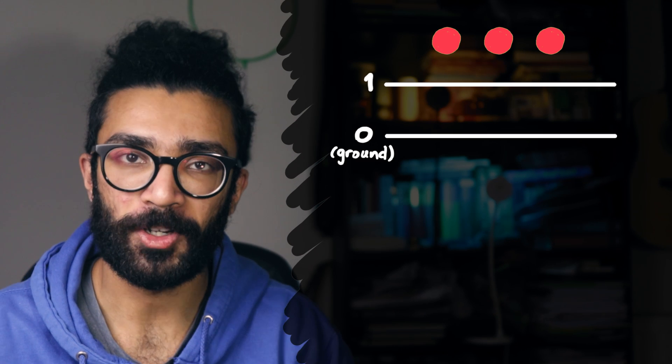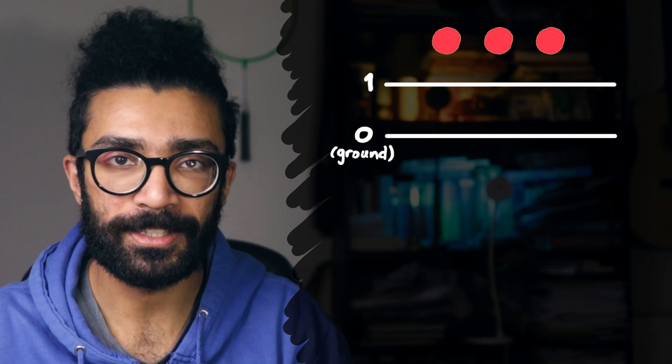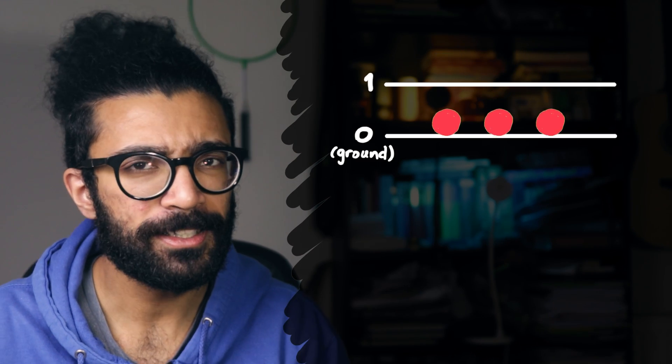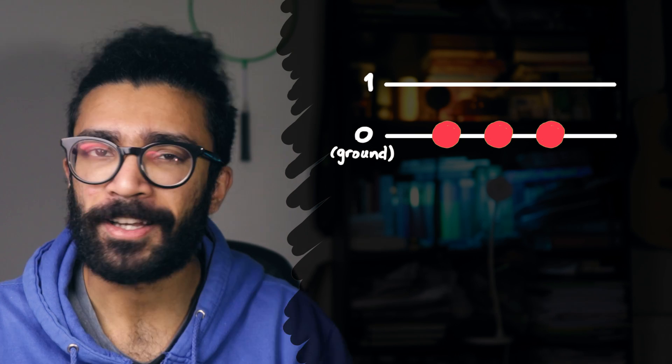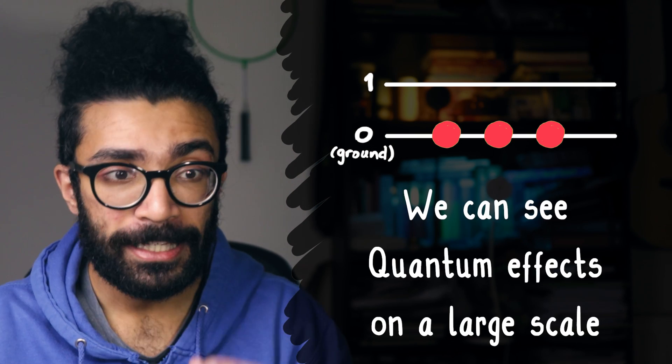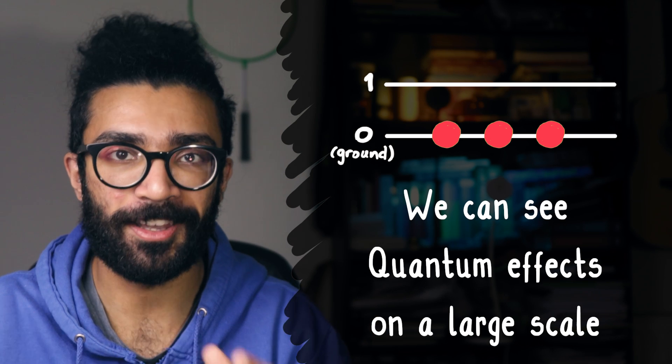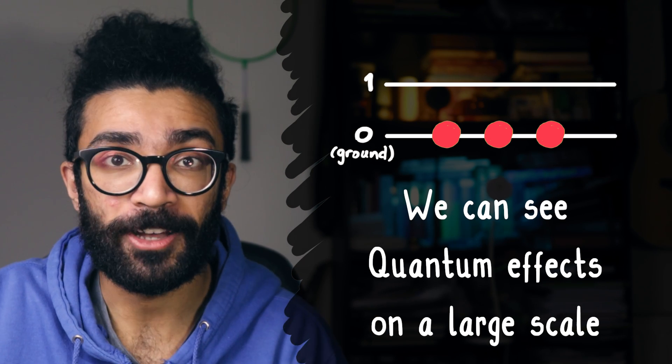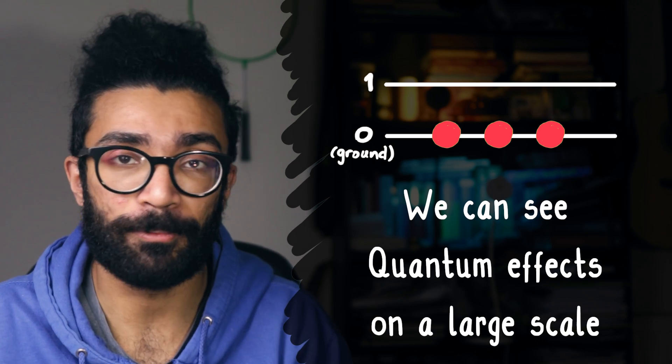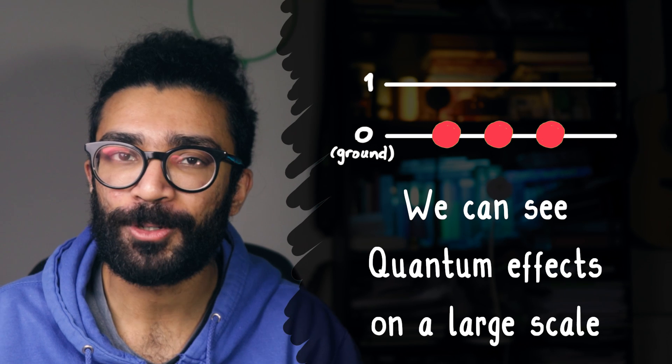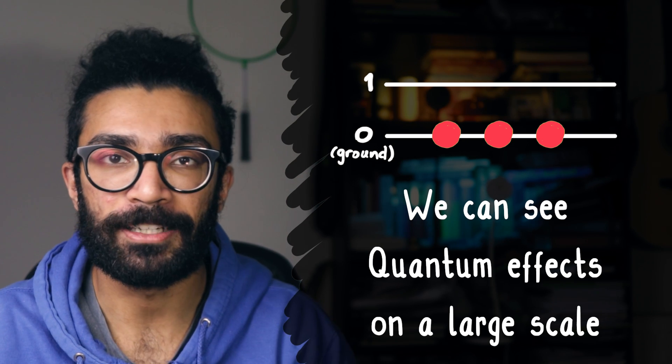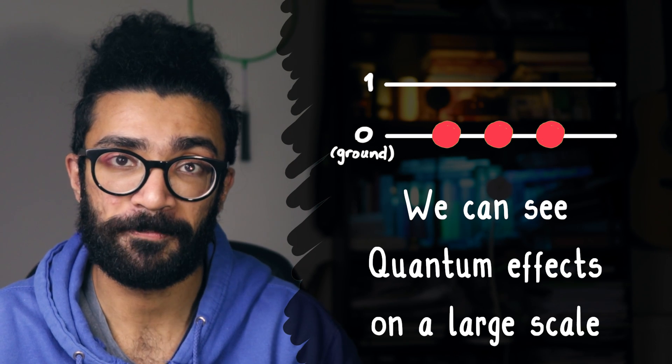Now when we have a Bose-Einstein condensate, when all of these particles fall into the same energy level, we tend to see some rather interesting effects. Scientists often like to describe this as being able to see quantum mechanical effects on a macroscopic level, on a large scale. Whereas normally quantum effects are difficult to see, they're restricted to being at a much smaller scale. But for a Bose-Einstein condensate, many quantum mechanical effects become readily apparent. For example, superfluidity has been observed in Bose-Einstein condensates.